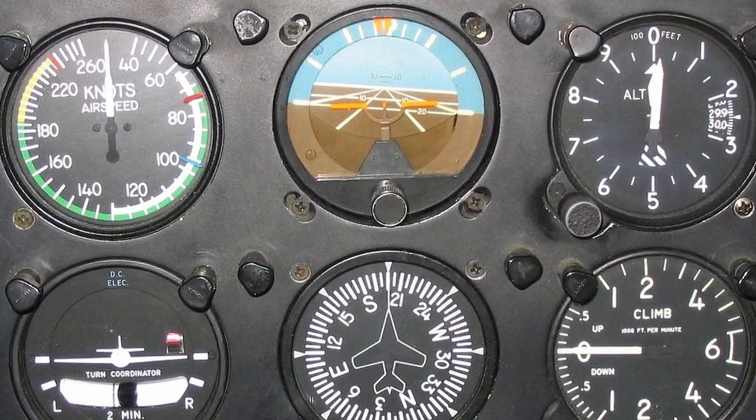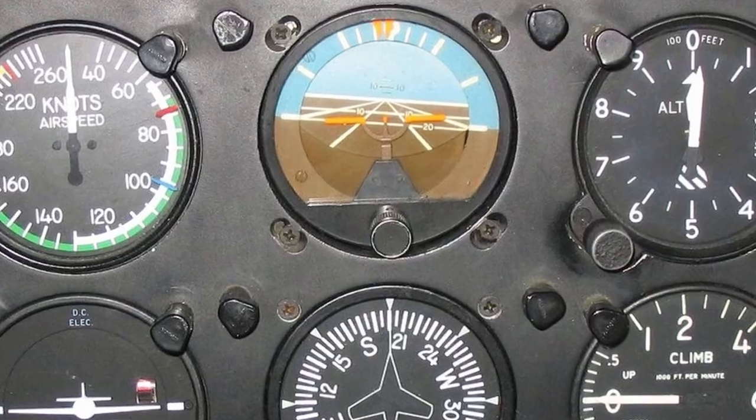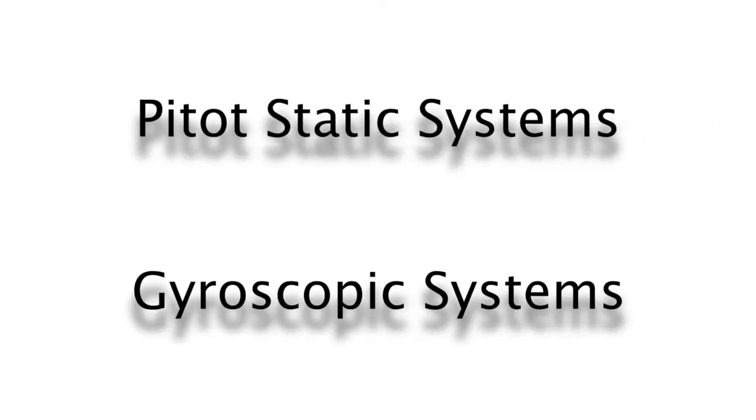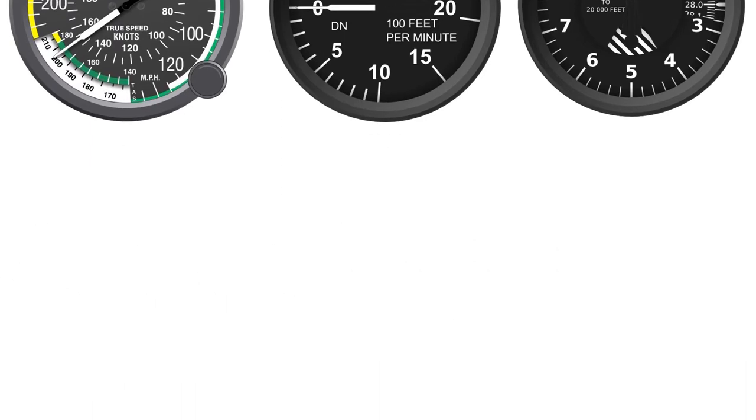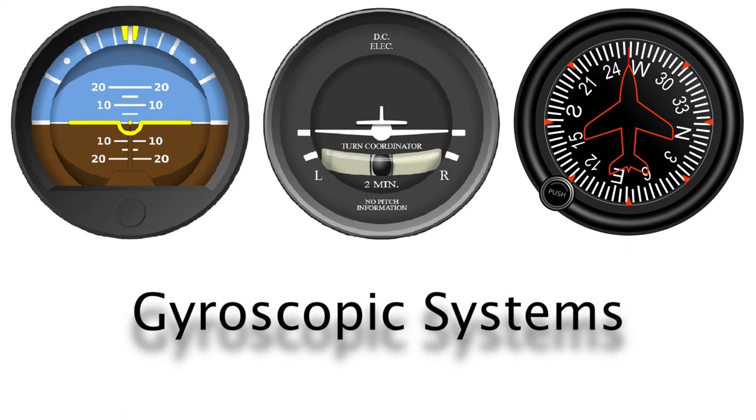So before we jump into each one of them, I should say there are two types of systems that power these instruments. First one is the pitot static system, which is used for airspeed indicator, vertical speed indicator, and altimeter. Second type is gyroscopic, which means as you guessed it uses a gyro, and this system is used in attitude indicator, turn coordinator, and heading indicator.